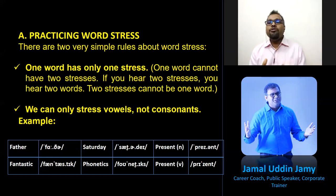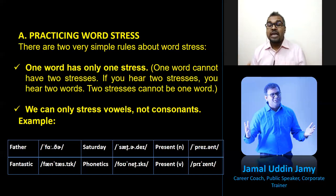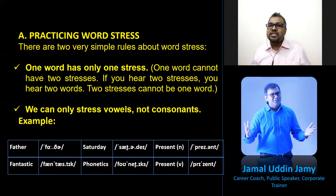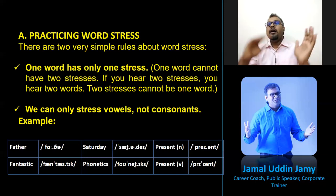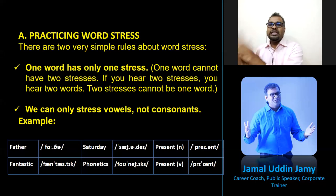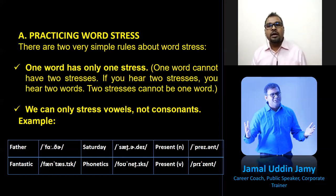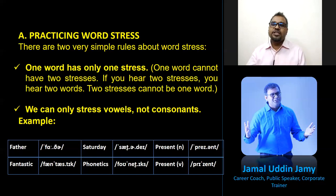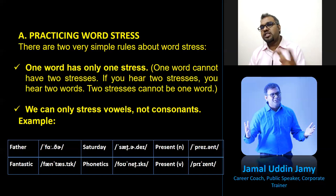Because if you want to pronounce English words by yourself using the dictionary, you need to know stress, syllables, and phonemes — all 45 phonetic symbols. Then you need to know all about syllables, and finally stress. For example: 'father' — two syllables, first one stressed. 'Saturday' — three syllables, first one stressed. 'Present' — two syllables, first one stressed. 'Fantastic' — three syllables, second one stressed. 'Phonetics' — four syllables, middle one stressed.